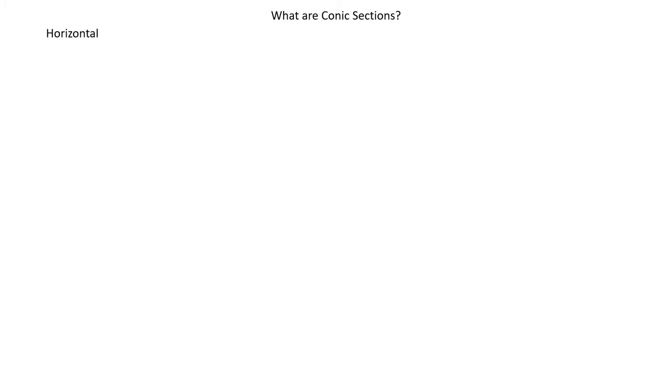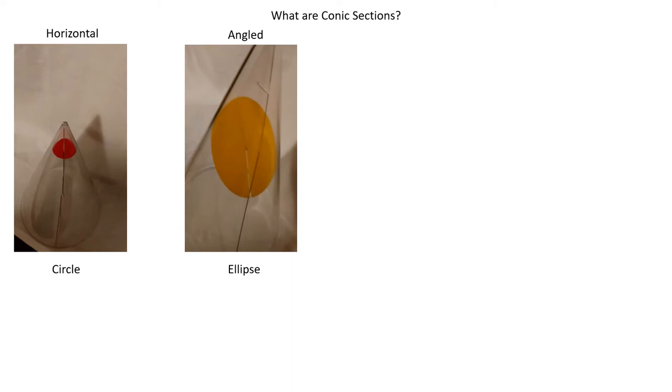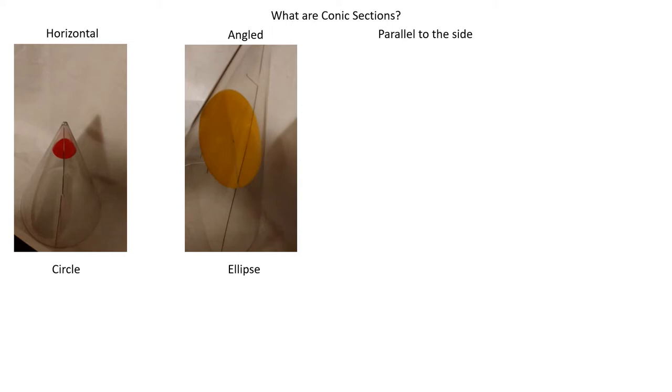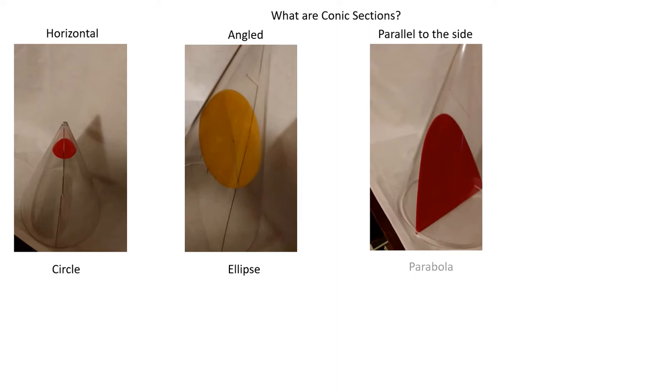Conic is from cone, so these all involve cones — specifically, cutting a cone. If we cut a cone sitting on a desk horizontally, we get a circle. If we cut it at an angle, we get an oval, which is an ellipse. If we cut it parallel to the side, we get a parabola. And if we cut it vertically, straight up and down, we get something that looks kind of like a parabola but isn't — that's called a hyperbola.